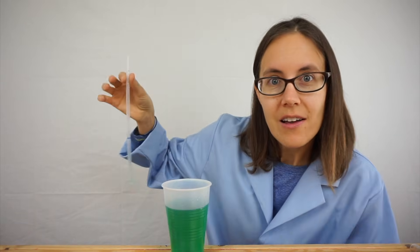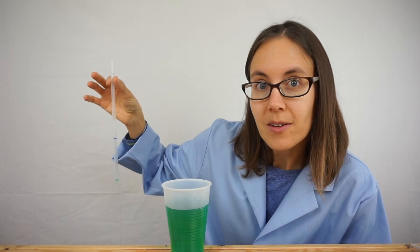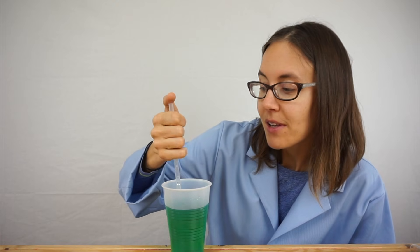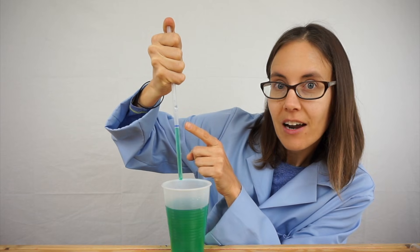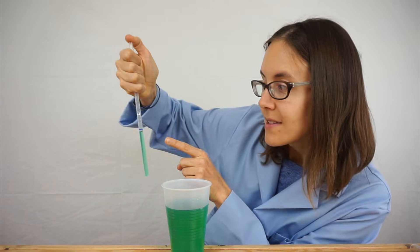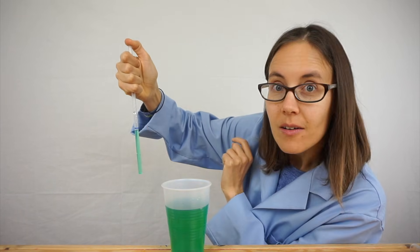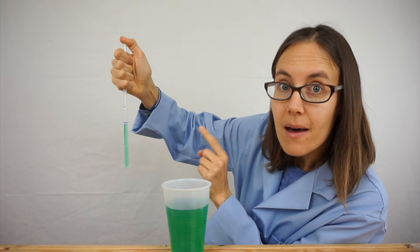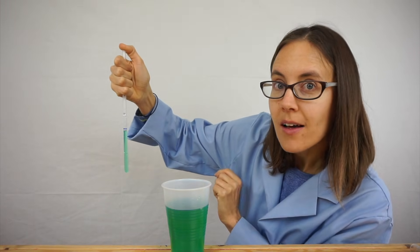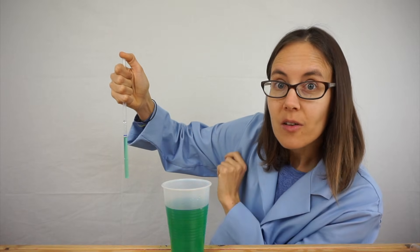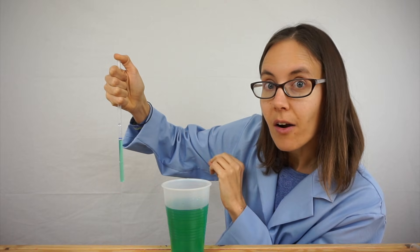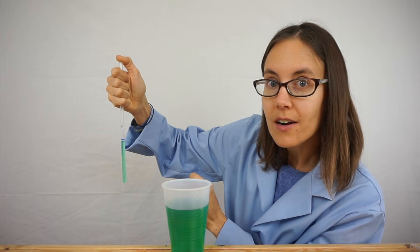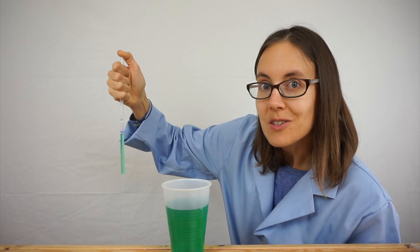Right now, this straw is experiencing even pressure from all sides because of the air in the room, but when I put it in water and place my thumb over the top, something changes. Do you see this line right here? The water was even with that line when it was inside the straw, but now that I've lifted it out, the water's dropped just a little bit lower. The amount of air in the top part of the straw did not change, but the space it occupies got a little bit bigger, and that changed the pressure here, which pulls the water up, keeping it in the straw.